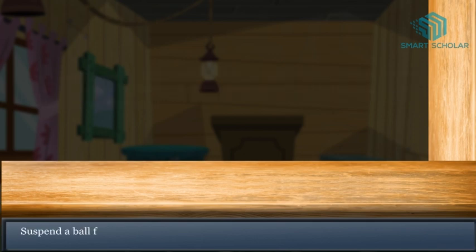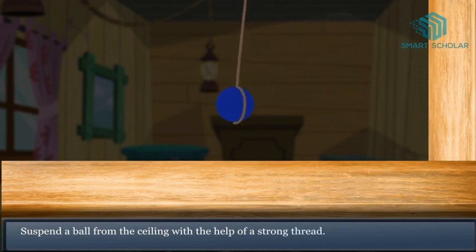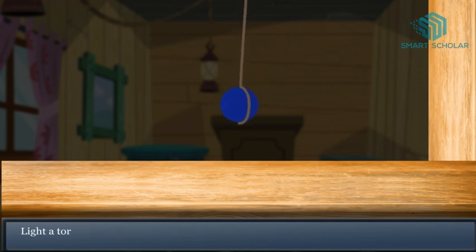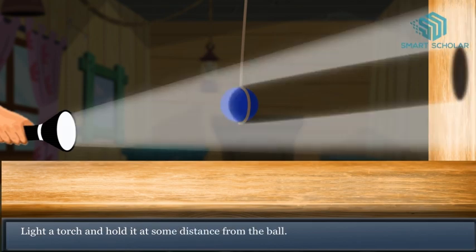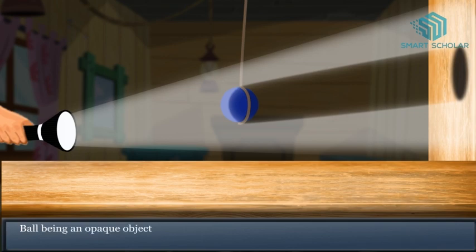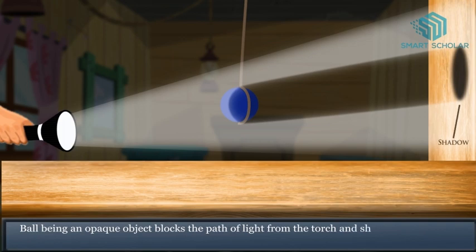Suspend a ball from the ceiling with the help of a strong thread. Light a torch and hold it at some distance from the ball. The ball, being an opaque object, blocks the path of light from the torch and a shadow is formed on the wall.